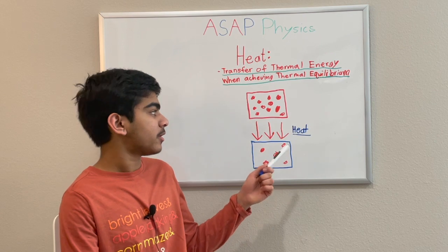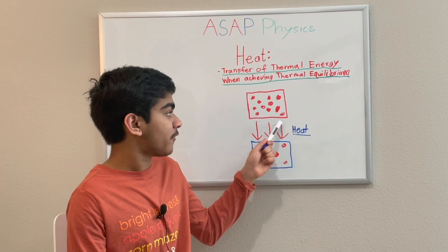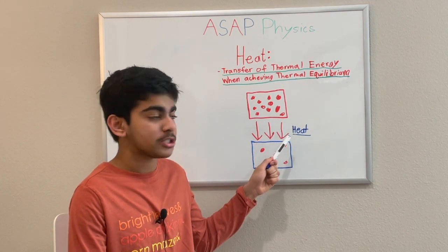So as you can see in this diagram here, the hot object is giving a lot of thermal energy to the cold object. The transfer of energy from the hot object to the cold object is heat.